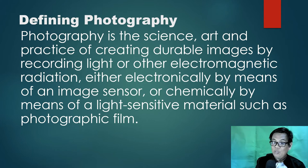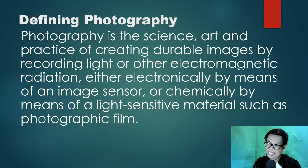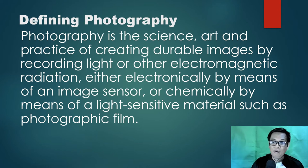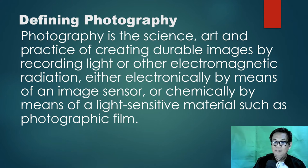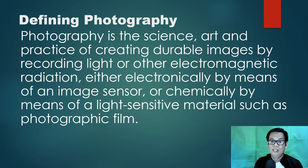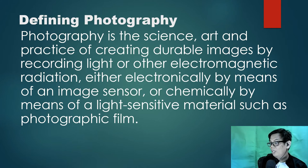We still need to use light in order to record and create an image. So how do we record light? The definition gives two methods: either electronically by means of an image sensor — which refers to the modern type of camera we use today — or chemically by means of a light-sensitive material such as photographic film.